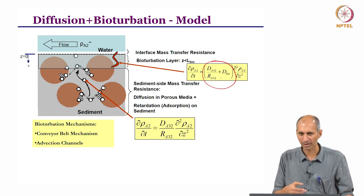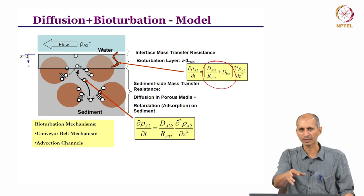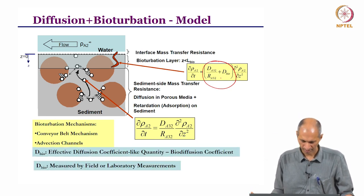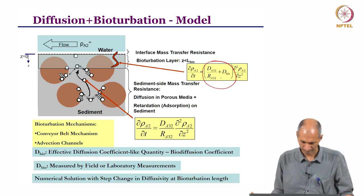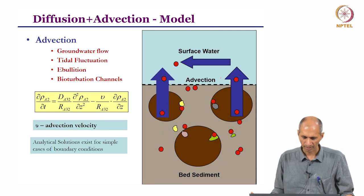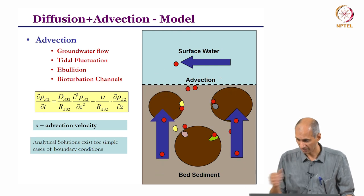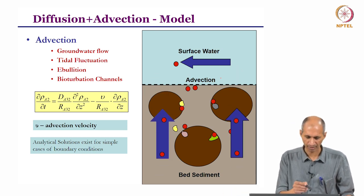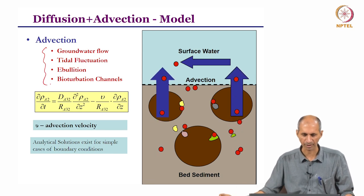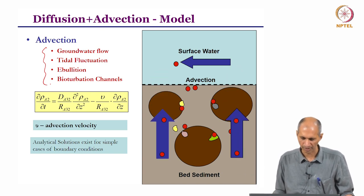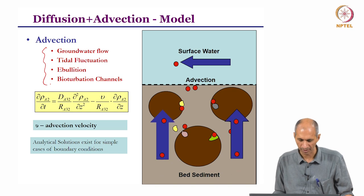The conveyor belt mechanism is when a worm feeds inside and ejects material out, which also causes advection channels. This is an advection plus diffusion model. The different cases where advection can occur include groundwater flow, tidal fluctuation, ebullition — where gas is formed inside — and bioturbation channels. All of these cause advection; there is a bulk flow happening.